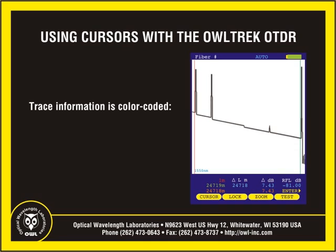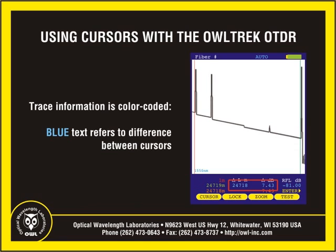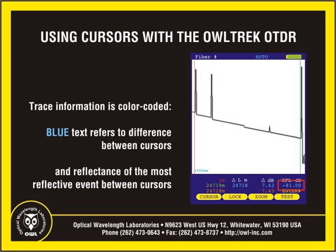Once the OTDR trace has been acquired, the trace will appear on the LCD screen and the distance and optical power information will be updated. Trace information is color-coded. Red and green informational text refers to the distance position of the red and green cursors. Blue informational text refers to the difference in distance and optical power between the red and green cursors, as well as the reflectance level of the most reflective event between them.